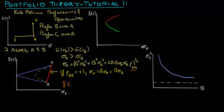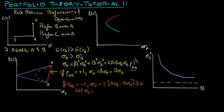Now what if the correlation between the two assets is negative one — so they are perfectly negatively correlated? In that case, the volatility of the portfolio reduces down to plus or minus A times the volatility of A minus B times the volatility of B, which is greater than or equal to zero, because we are taking the square root to compute the volatility. Let the volatility of the portfolio be equal to zero. In risk-return space, the point on the y-axis where volatility of the portfolio is zero corresponds to a correlation of negative one.